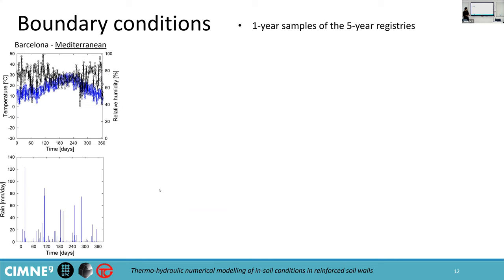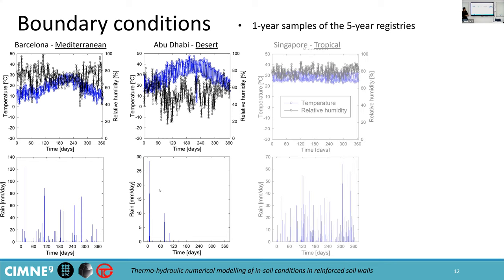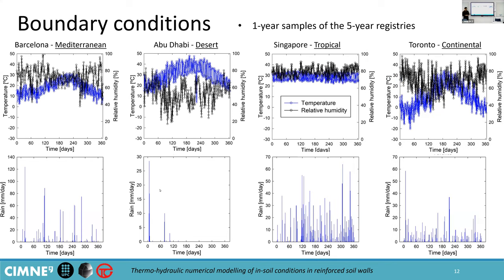Regarding the boundary conditions, we've used daily records for periods of five years for four different climates: Mediterranean, desert, tropical, and continental — representing the cities of Barcelona, Abu Dhabi, Singapore, and Toronto. These records are of temperature, relative humidity, and precipitation, daily for periods of five years.